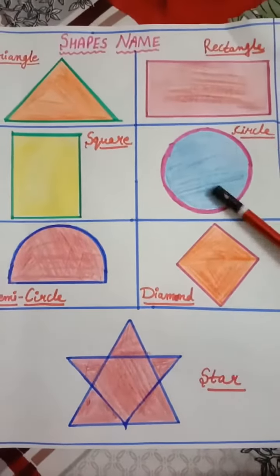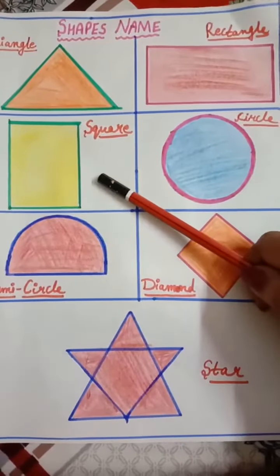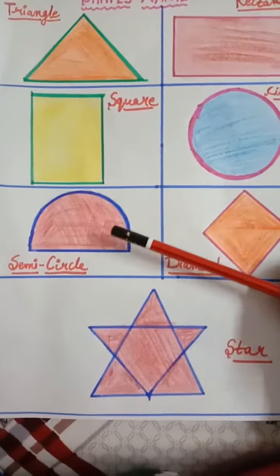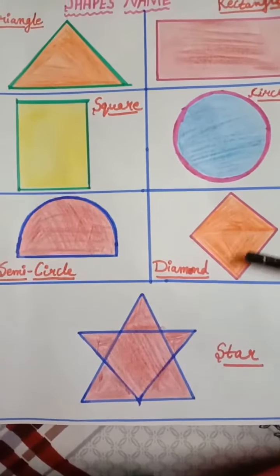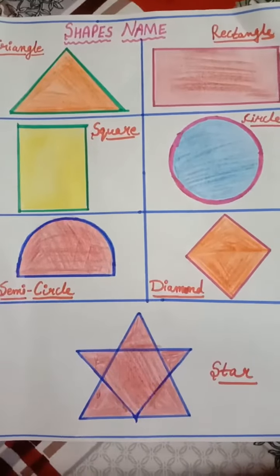So let's revise once more. Triangle, rectangle, square, circle, semicircle, diamond and star. So you will have to learn the shape's name.